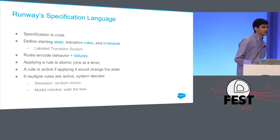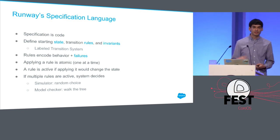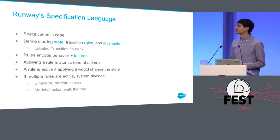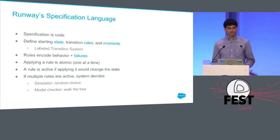A strong type system and invariants help make sure we're not making silly mistakes.